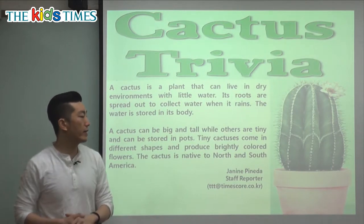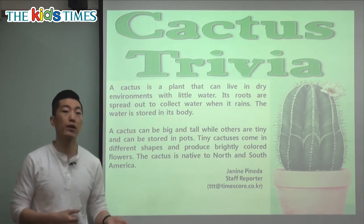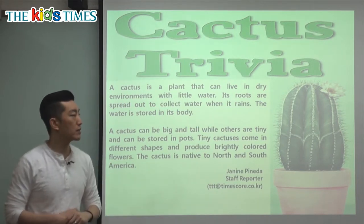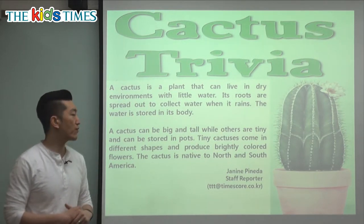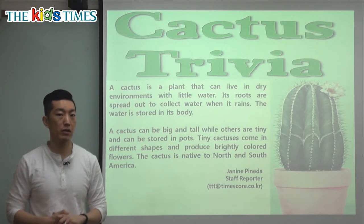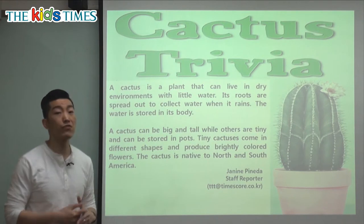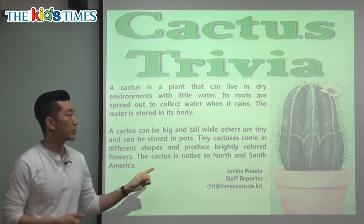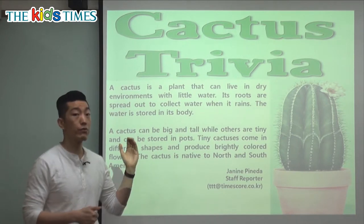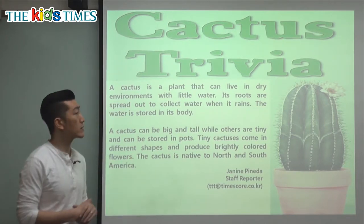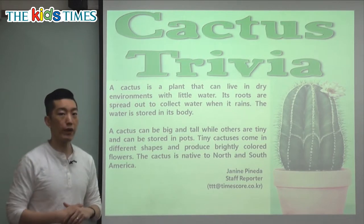The cactus is native to North and South America. Native means it's from there — it was first found there. In North America, driving toward California through Arizona, where it's very dry and hot, you can see many different cactuses. Some have flowers and some are very large. Cactuses come in many different colors and shapes, and some produce very bright flowers.